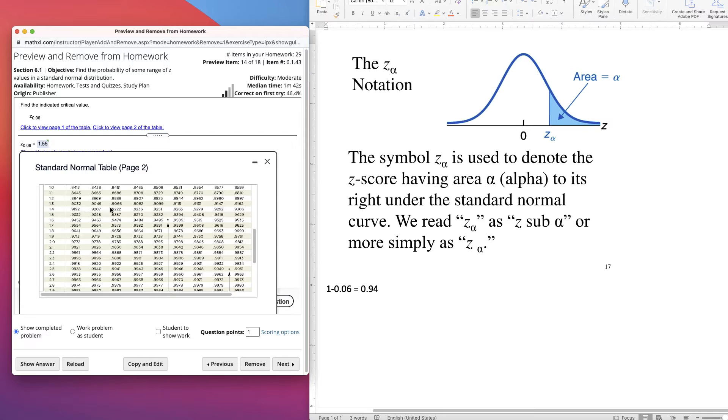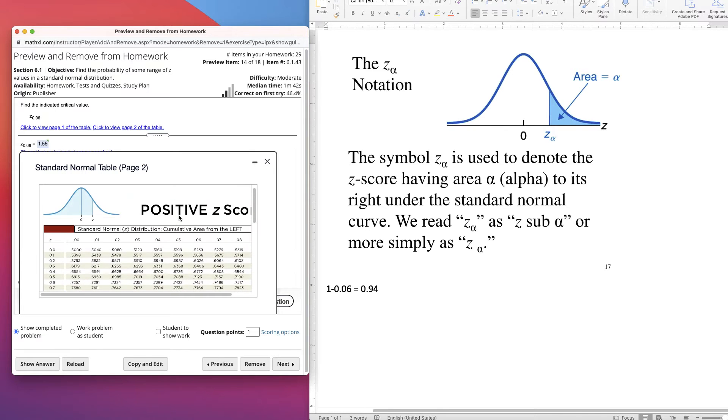Here's 0.94. Look for it as close as I can get to it. 0.92, 0.93, 0.9. You can find it's right in between these two, right? There's 6 to there and 6 to there. So 1.555, right? It's in the half. So the z score should be 1.555.